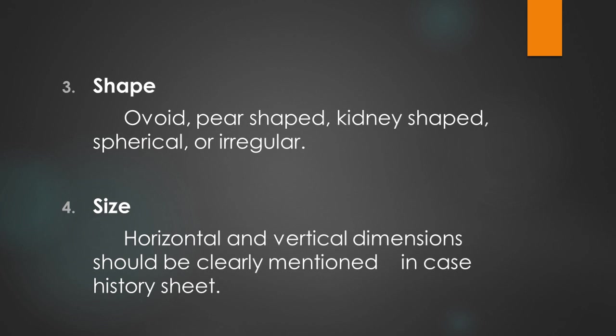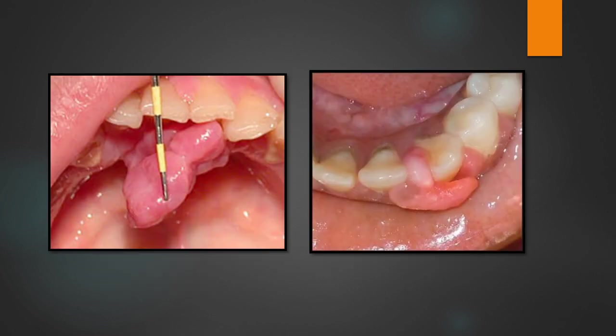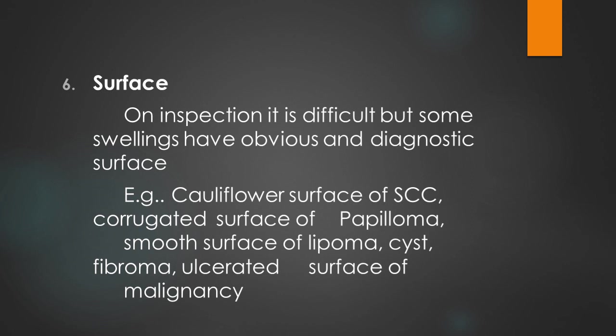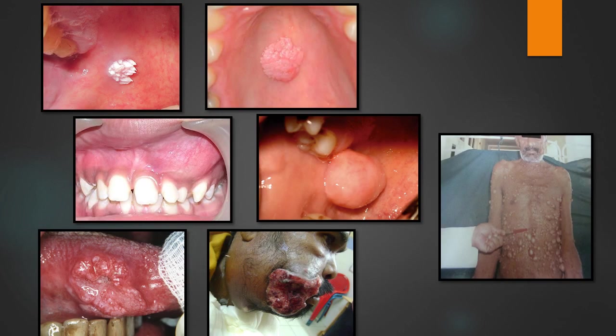The size of the swelling — the horizontal and vertical dimensions — should be clearly mentioned in the case history sheet. Some swellings have obvious and diagnostic surfaces: a cauliflower-like shape in squamous cell carcinoma, corrugated appearance in papilloma, smooth surface in irritational fibroma or lipoma, and an ulcerated surface in cases of malignancy. A pedunculated swelling has a stalk.